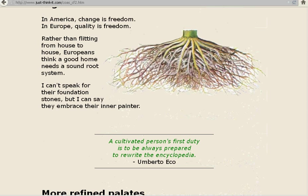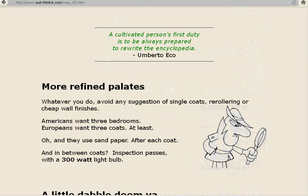More refined palettes. Whatever you do, avoid any suggestion of single coats, re-rollering, or cheap wall finishes. Americans want three bedrooms, Europeans want three coats, at least. And they use sandpaper, after each coat. And in between coats, inspection passes with a 300-watt light bulb. A little dabble dumia. I don't like to dabble in anything I don't do well. J.B. Smoove.